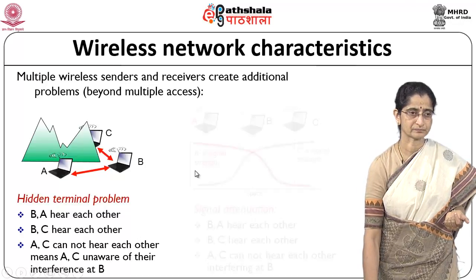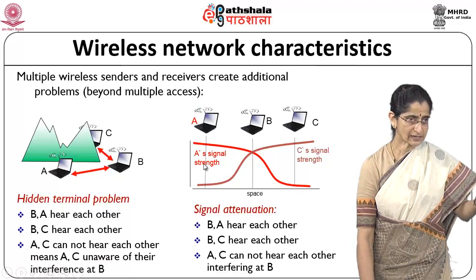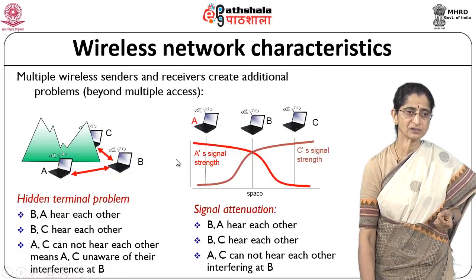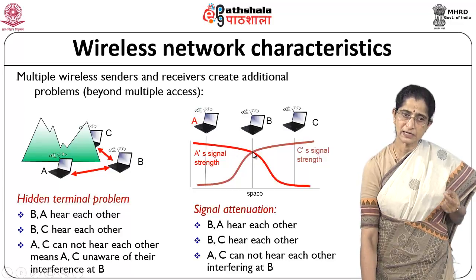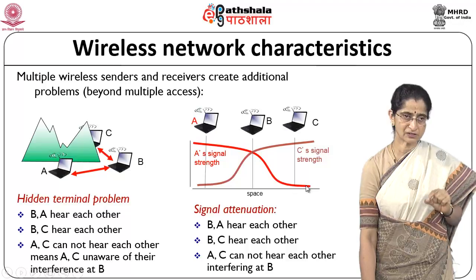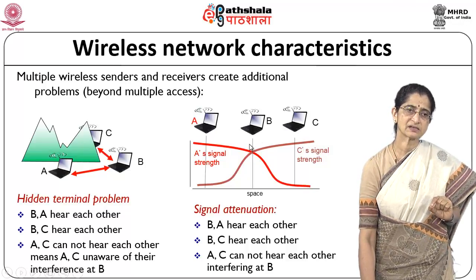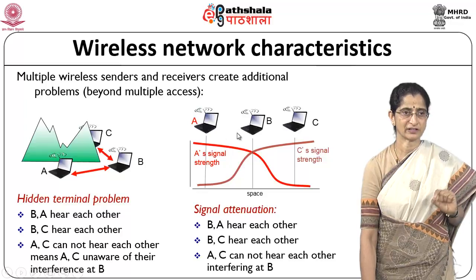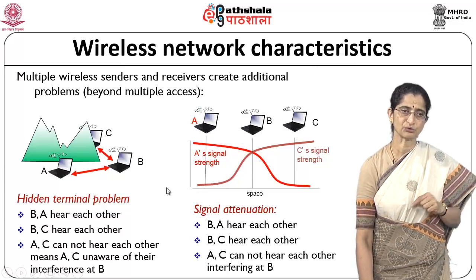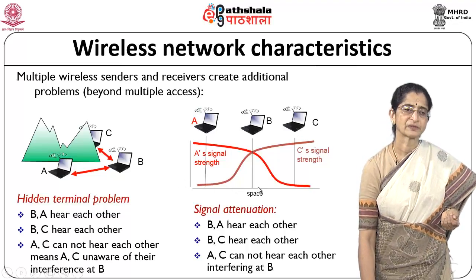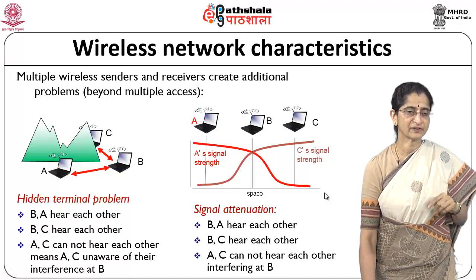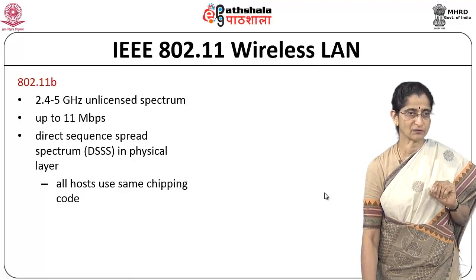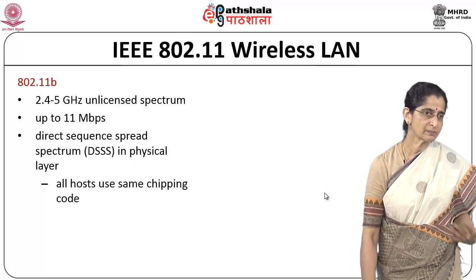This hidden terminal problem is accentuated by signal attenuation. A's signal strength may be strong enough for B to hear it, but by the time it reaches C, the signal is too low for C to hear. Similarly, C's signal is decipherable at B but too low at A. So A and C cannot hear each other, causing interference at B. This is a problem we need to handle, and we will look at how IEEE 802.11 handles these different problems.